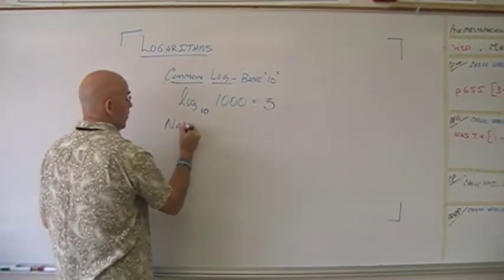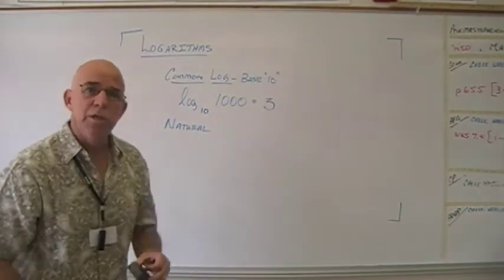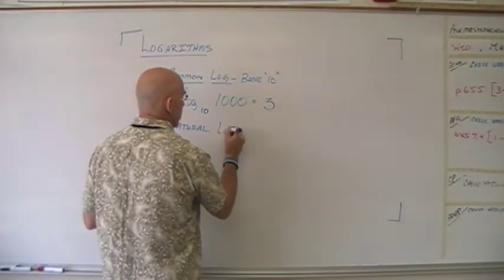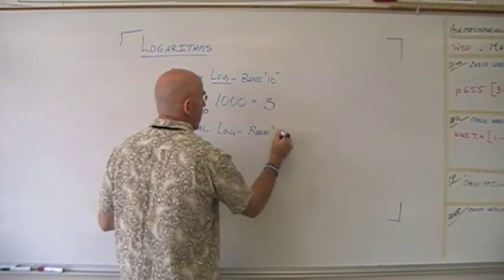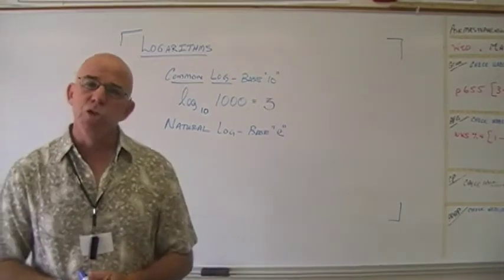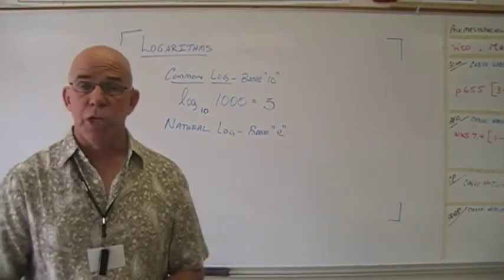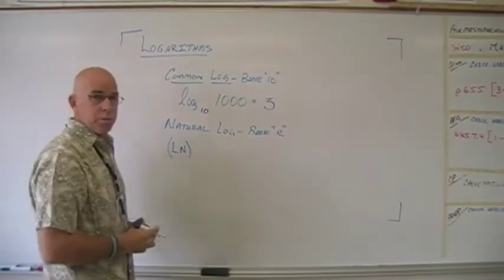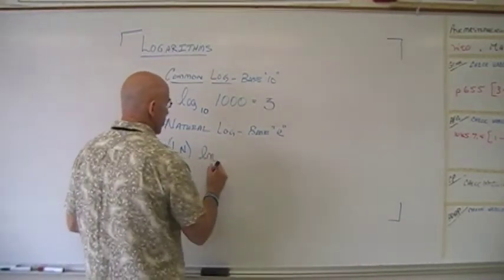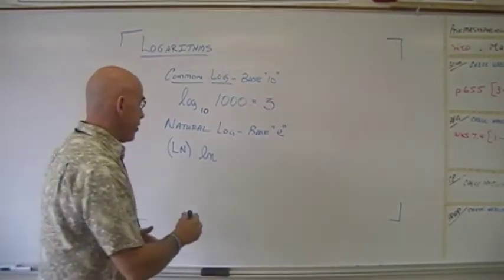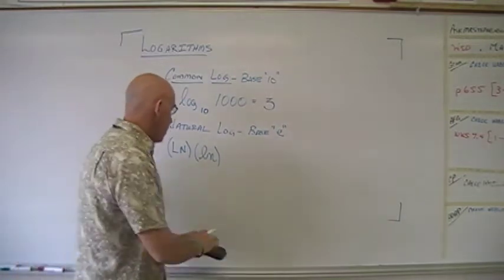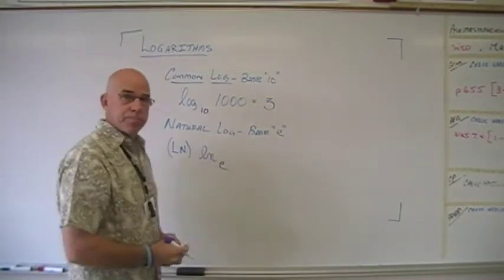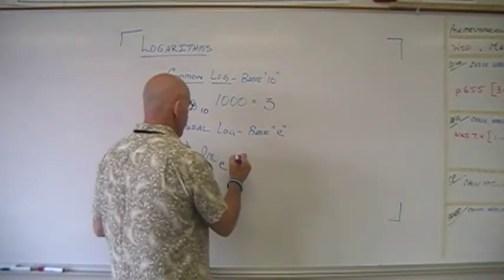There's another type of log that occurs so naturally throughout our world that we call it the natural log. It has a base of e. You could write log with base e, but we use a different symbol to communicate this: ln. On your calculator some use capital LN, and worksheets use lowercase ln — they are the same. Its base is e, so if asked to find the natural log of some number, you use that ln key.